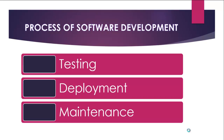The testing phase is where the software is formally tested using methods such as functional testing, performance testing, and security testing to ensure it meets specification. The deployment phase is where the software is released to end users, including training so users know how to use it. Finally, the maintenance stage involves adding new features, fixing errors, and upgrading the program to meet users' expectations.